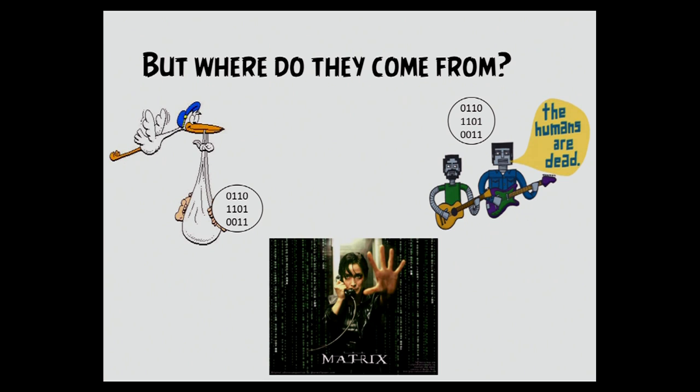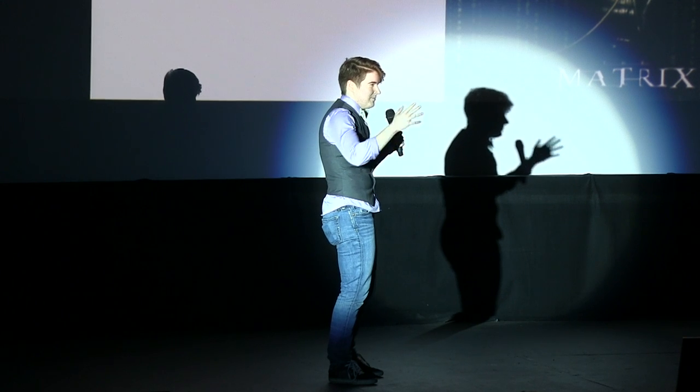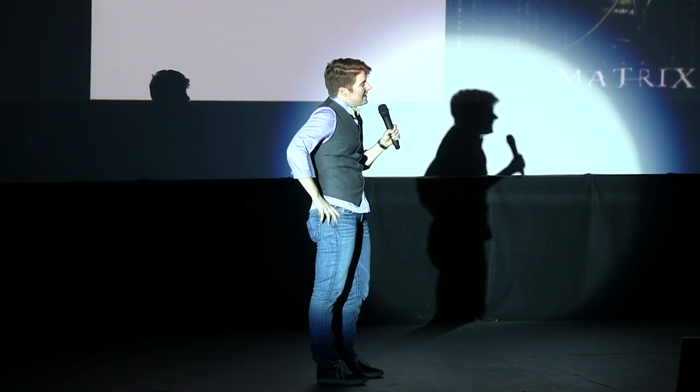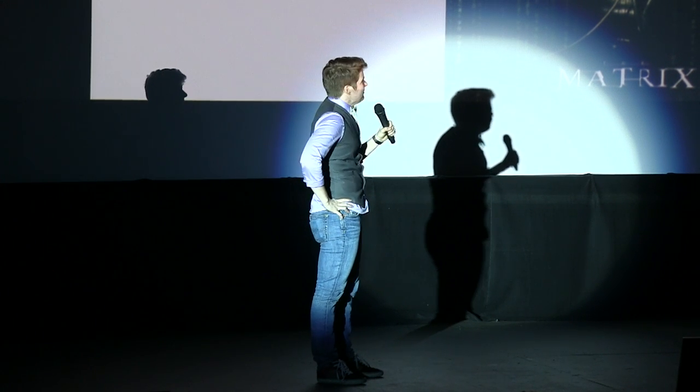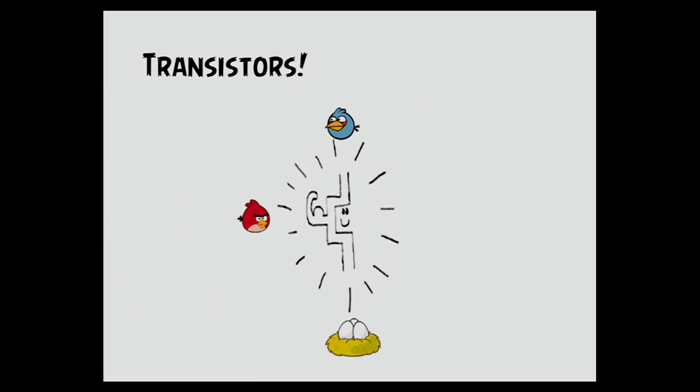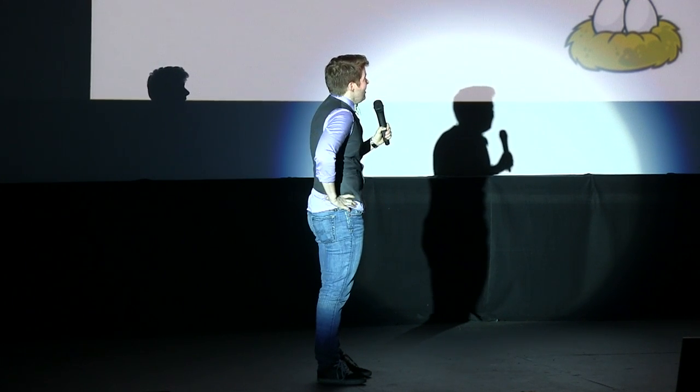But where do they come from? Maybe they come from the stork — that's where babies come from. Or binary solos, or even the Matrix — I mean, there was like binary something going on there, right? Actually, it doesn't come from any of those places. It comes from something called a transistor — the mighty transistor. I'm going to talk to you about how the transistor is going to help the angry birds rescue their eggs through the miracle of semiconductor physics.